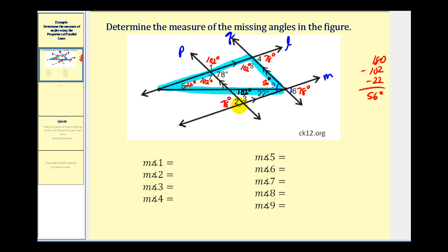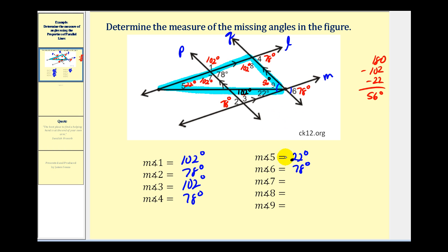Now let's record all our answers. Angle one was one hundred two degrees. Angle two was seventy-eight degrees. Angle three was one hundred two degrees. Angle four was seventy-eight degrees. Angle five was twenty-two degrees. Angle six was seventy-eight degrees. Angle seven was one hundred two degrees. Angle eight was one hundred two degrees. And angle nine was fifty-six degrees. I always think these types of problems are fun — it's like a puzzle you solve based on new information you've learned. I hope you found this helpful.